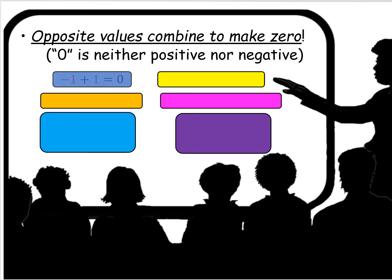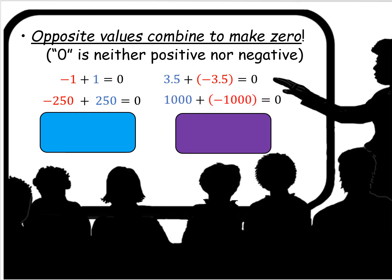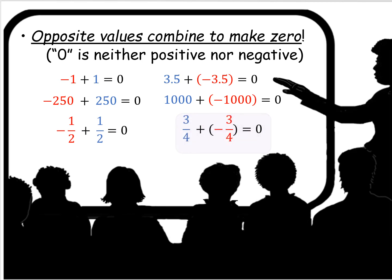But here's what we're really trying to get at: opposite values combine to make zero. Remember that zero is neither positive nor negative. So negative one plus one is zero — negative one and positive one are opposite values and when you add them together you get zero. Negative 250 plus 250 is zero. Negative one half plus a positive one half — those combine to make zero because they're opposite values.